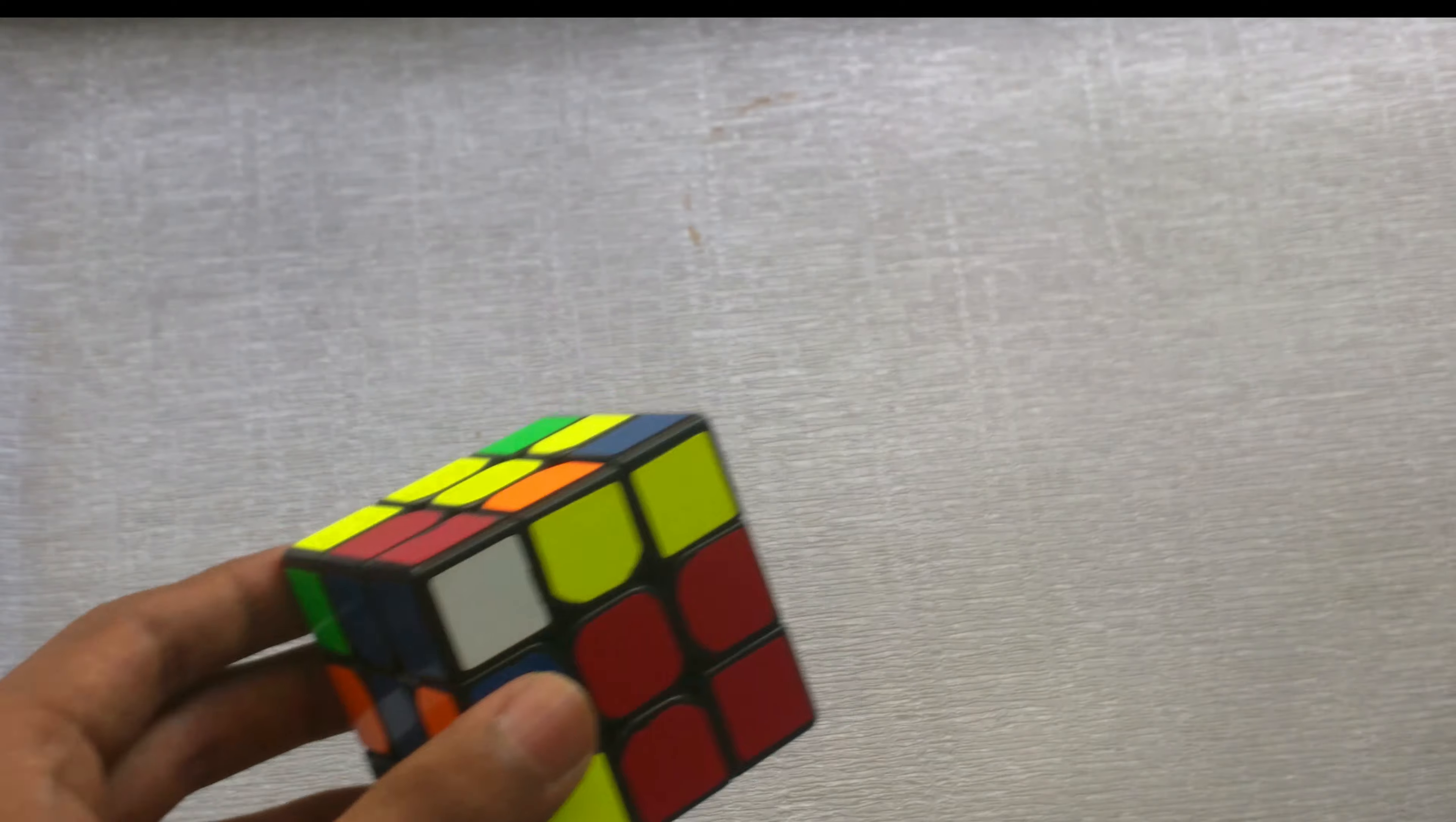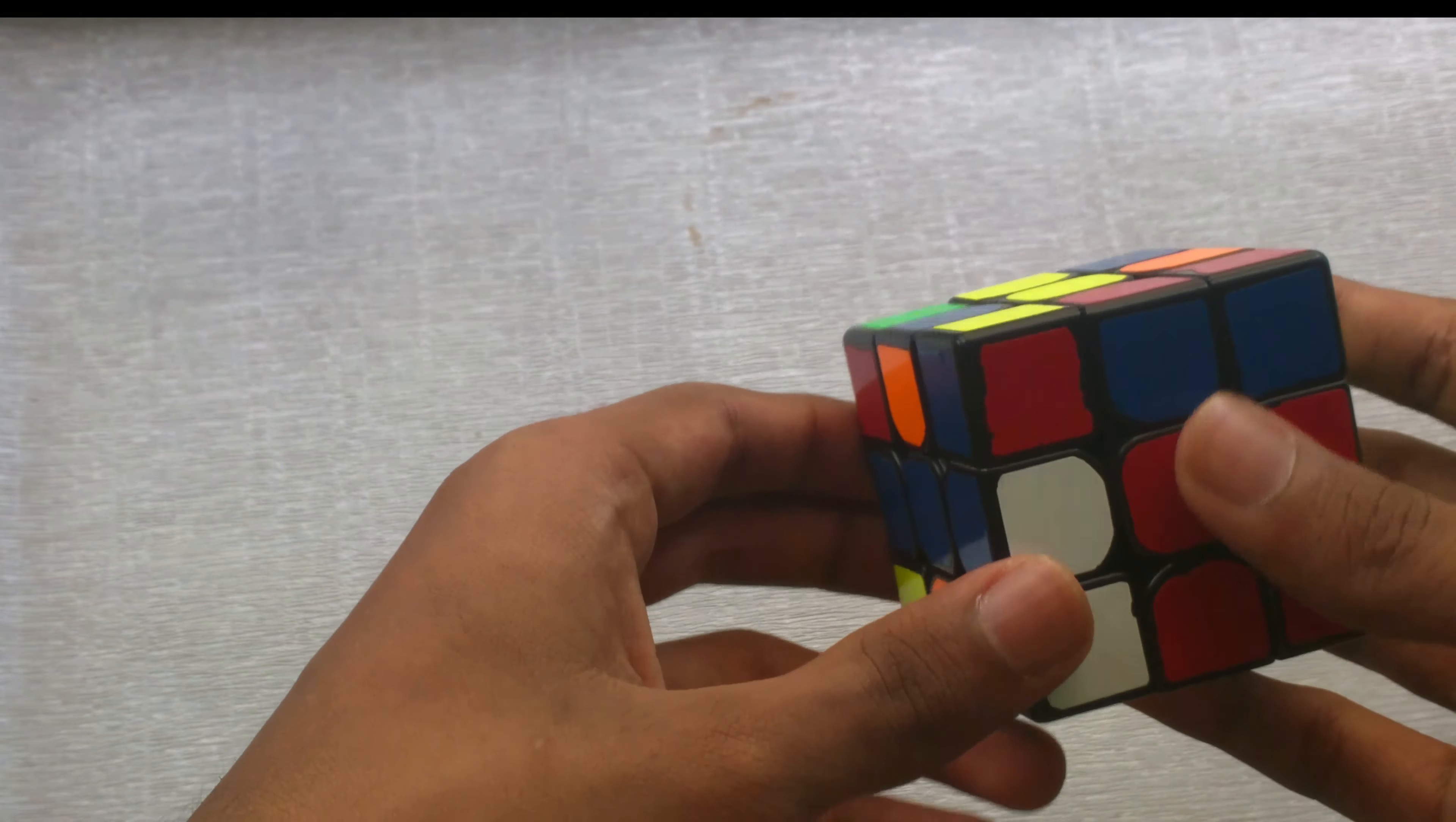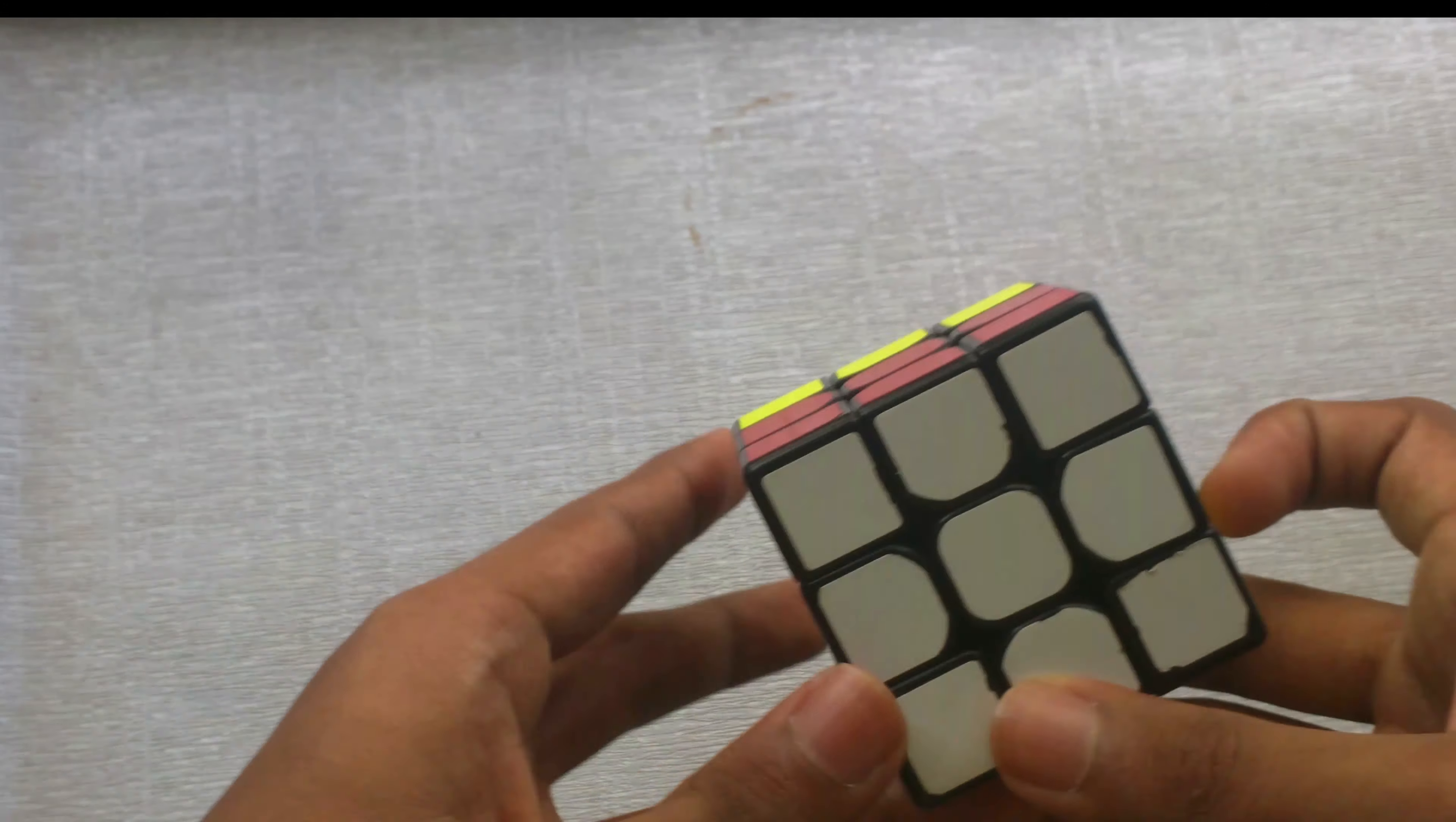And the inserting is just like the previous example. So you want to put the white on the right, and just do this. That's done.